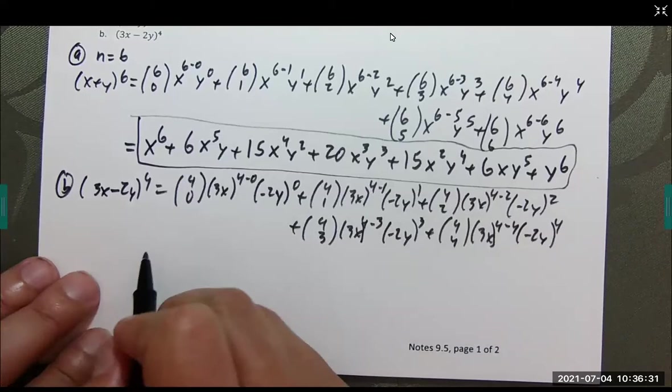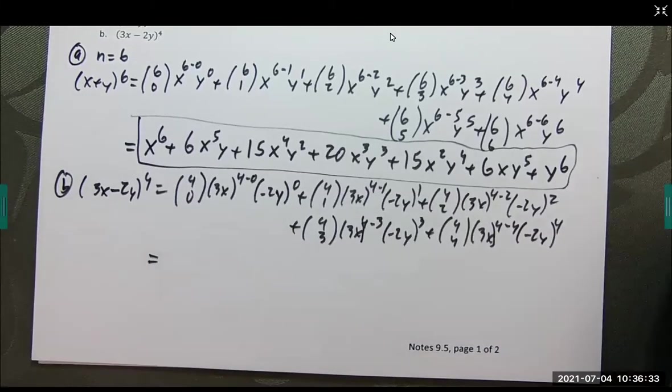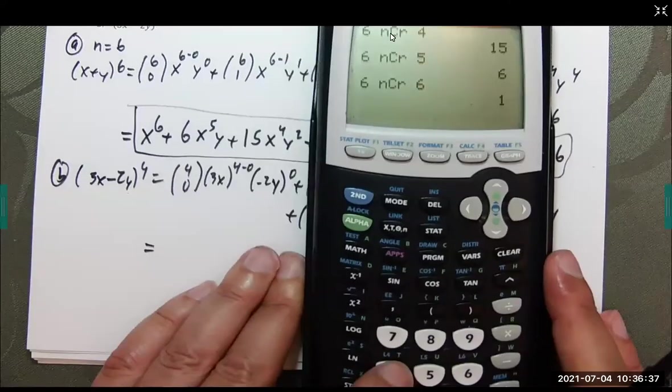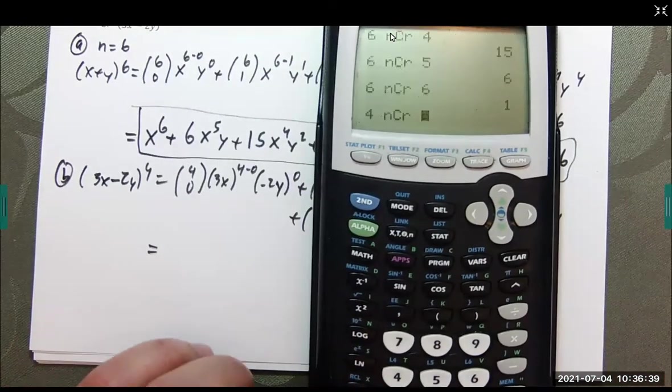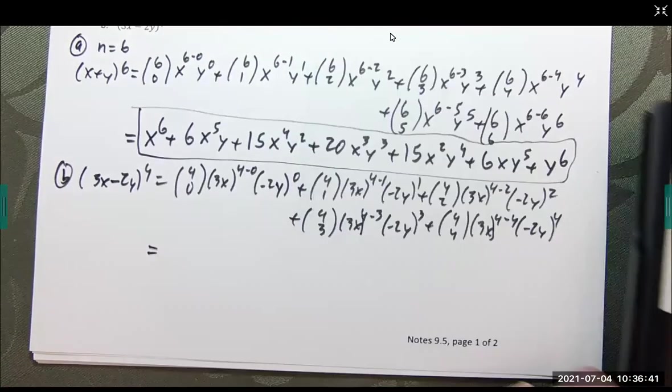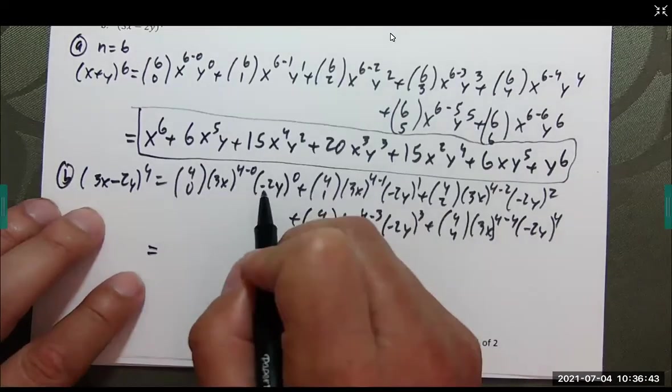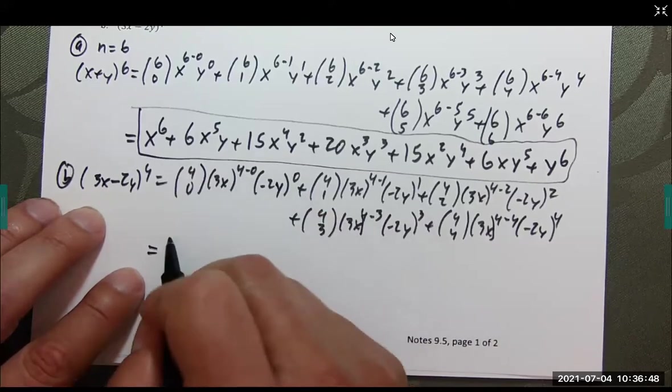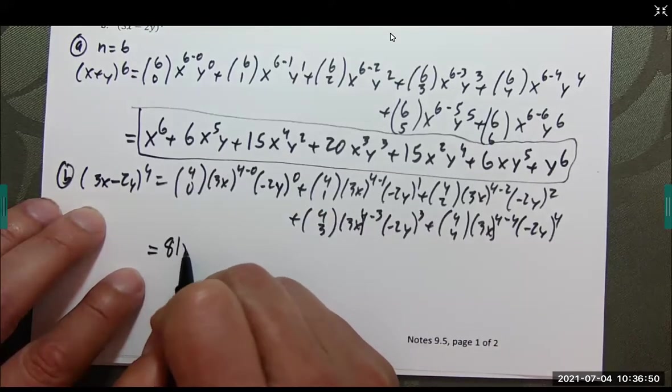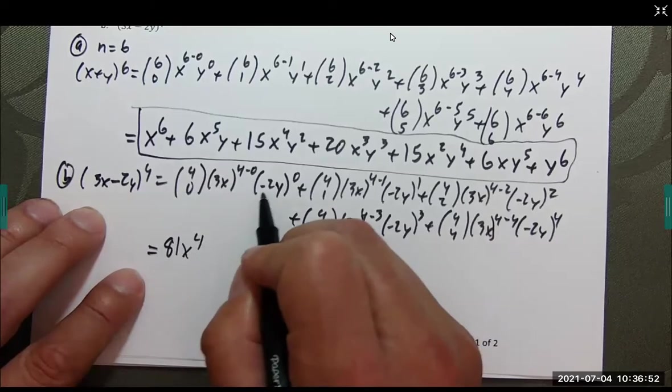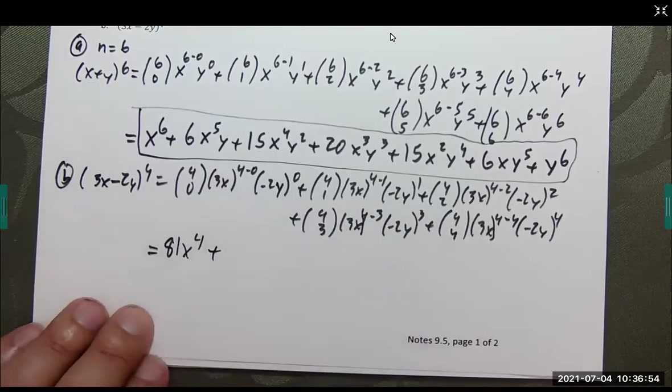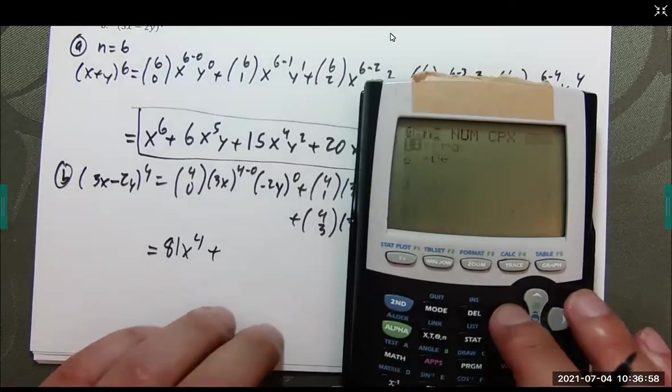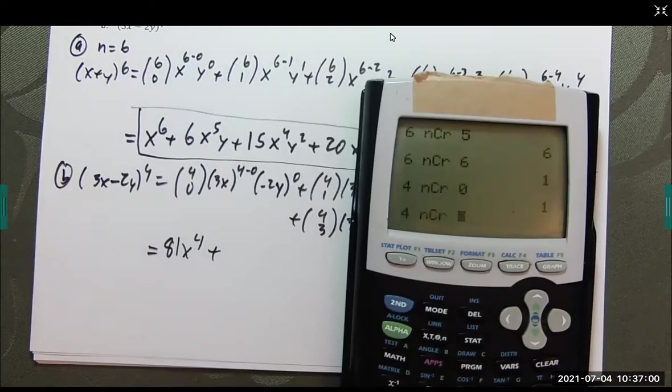Plus 4 choose 2, 3x to the (4 minus 2) power, negative 2y to the 2nd power. Plus 4 choose 3, 3x to the (4 minus 3) power, negative 2y to the third power. Plus 4 choose 4, 3x to the (4 minus 4) power, negative 2y to the fourth power. So, let's wrestle all of this out. 4 choose 0 is 1.